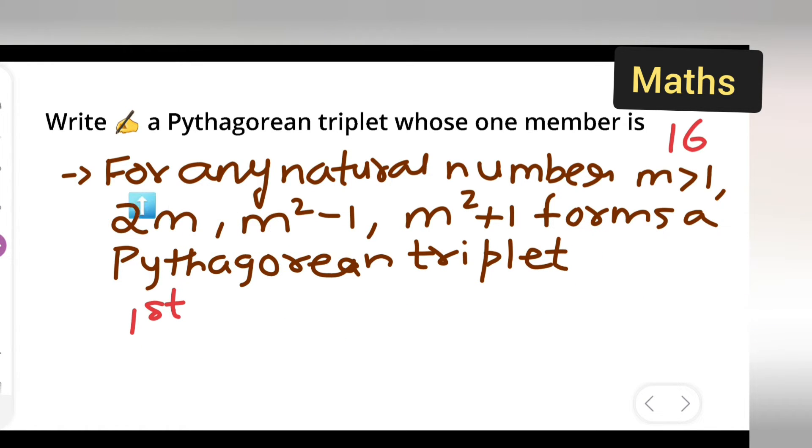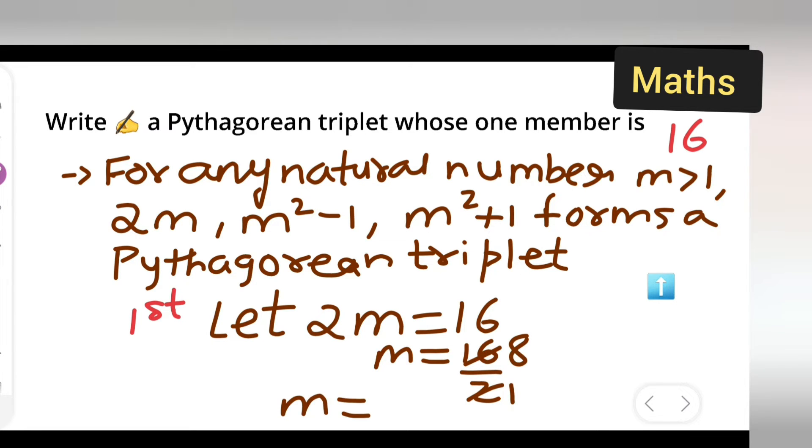So the first part will be 2m. Write down here 2m. Let 2m equal 16. So you are going to get m equals 16 upon 2. 2 times 1 is 2, 2 times 8 is 16. So m equals 8.